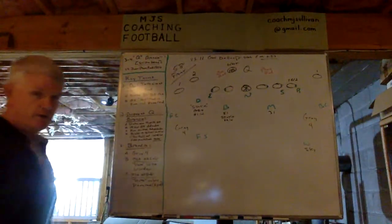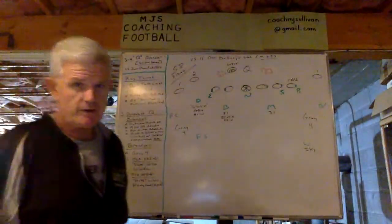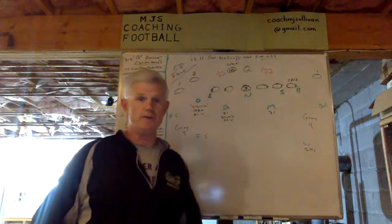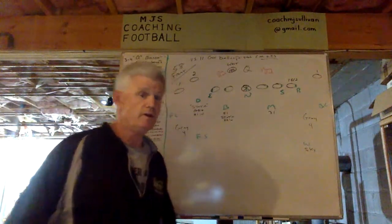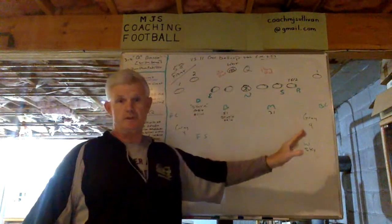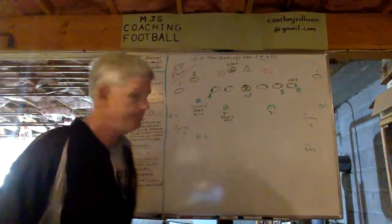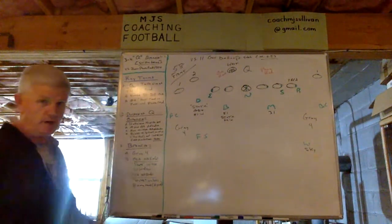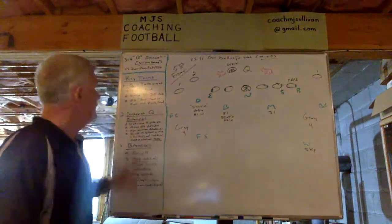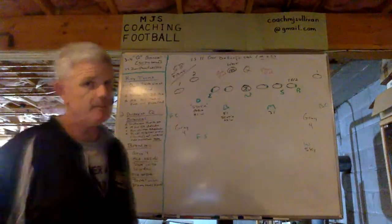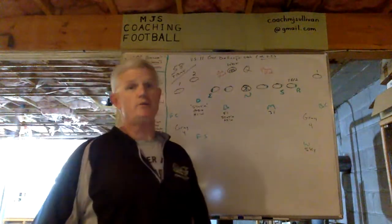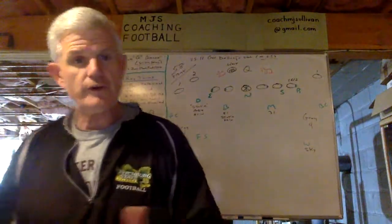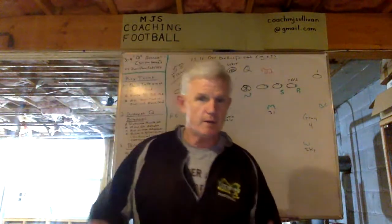The key terms over here will help you understand what Q Bronco is all about and how we're able to execute it, and then I'll diagram it. So the first key term is Q. Q means we're going to take aim at the quarterback's read — not the quarterback, but the quarterback's read. Zone read, power read, RPO.